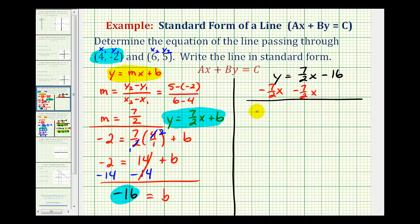So now we'd have negative seven-halves x plus y equals negative sixteen.